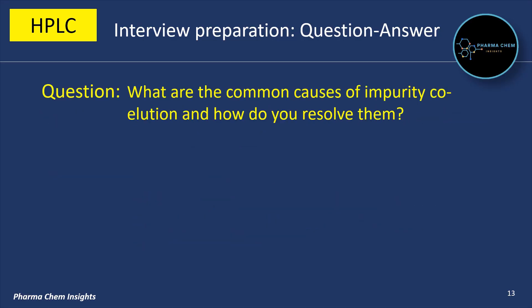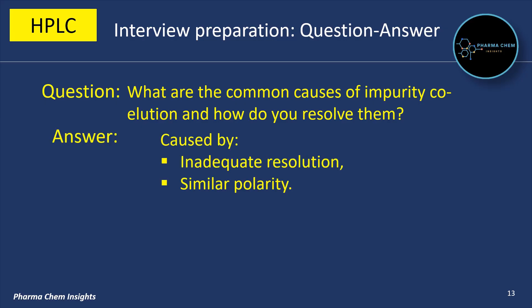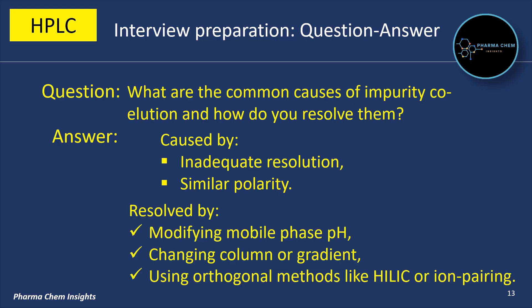Next question: what are the common causes of impurity coelution and how do you resolve them? Impurity coelution is caused by inadequate resolution or similar polarity. It is resolved by modifying mobile phase pH, changing the column, using a gradient method, or using orthogonal methods like HILIC or ion pairing.